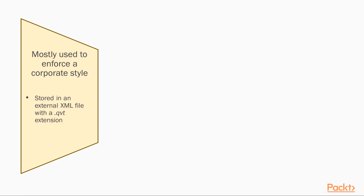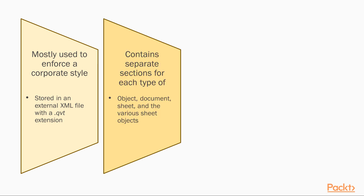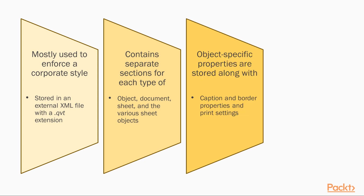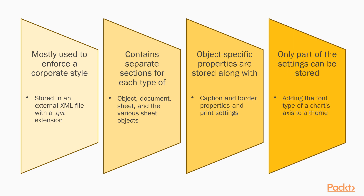A theme is stored in an external XML file with a .qvt extension. It contains separate sections for each type of object: document, sheet, and the various sheet objects. For each of these objects, the object-specific properties are stored, as well as caption and border properties, and print settings. You can even store only part of the settings, for example adding the font type of a chart's axis to a theme while ignoring its font colour.